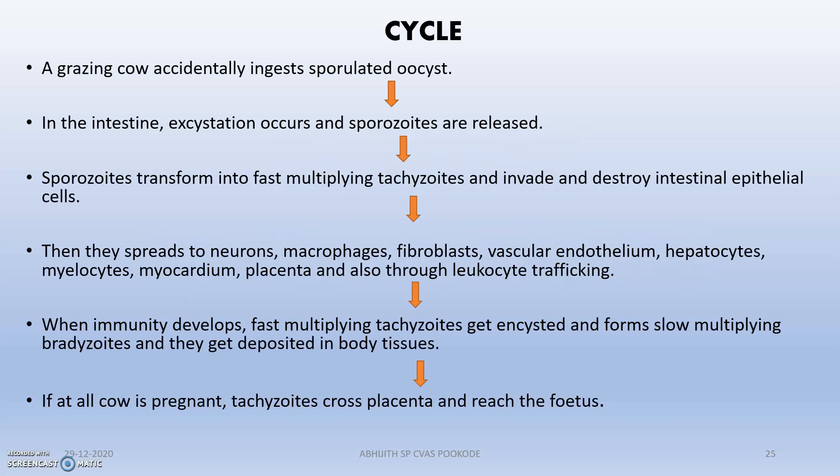In bovine neosporosis, a grazing cow accidentally ingests sporulated oocysts. In the intestine, oocysts excyst and sporozoites are released, which transform into fast-multiplying tachyzoites that invade and destroy intestinal epithelial cells. They then spread to neurons, macrophages, fibroblasts, vascular endothelium, hepatocytes, myelocytes, myocardium, and placenta — also moving via leukocyte trafficking. When immunity develops, tachyzoites convert into slow-multiplying bradyzoites and encyst in body tissues. If the cow is pregnant, tachyzoites are actively disseminated through the placenta, reaching the fetus and causing abortion.